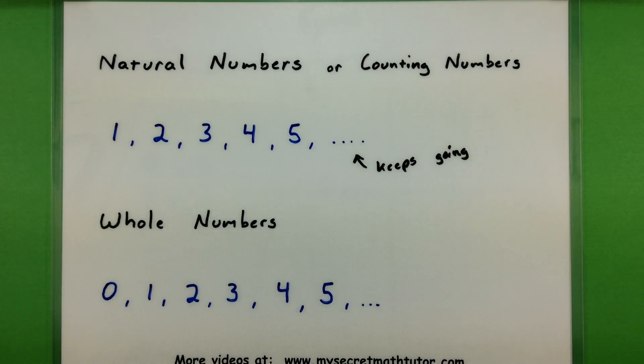Now, as we get to the whole numbers, you'll notice that it contains a lot of the same numbers, but we also include 0 in that category. So I can say that 0,